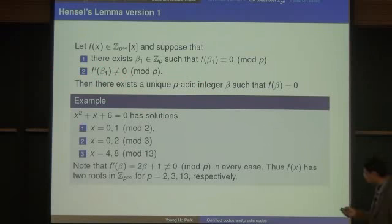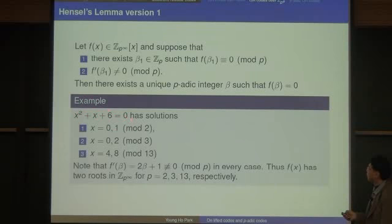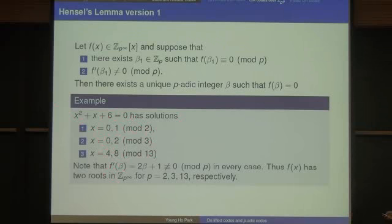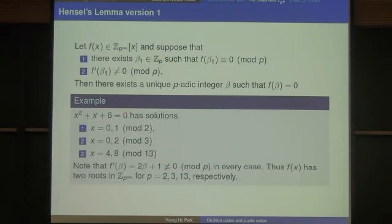For example, x^2 plus x plus 6 equals 0 has solutions modulo 2, 3, and 13. And f'(beta) is 2*beta plus 1, which is not equal to 0 in any of these cases. Therefore, f(x) equals 0 has two roots in Z_p-infinity for p equals 2, 3, or 13.